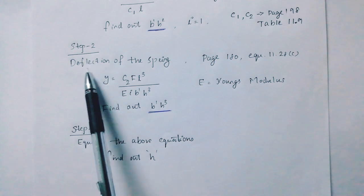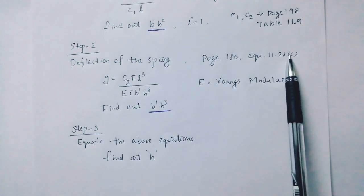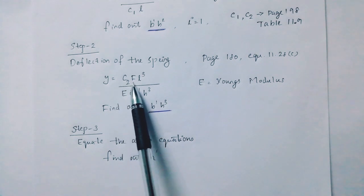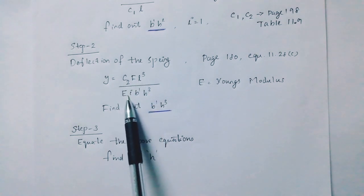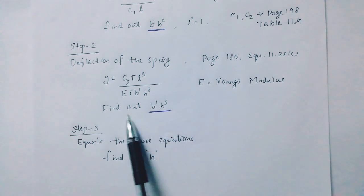Then let's take step 2, the deflection of the spring. The equation is page 180, 11.28c. Y equals c2 into f into l cubed divided by e into i into b dash h cubed. That's why we get b dash h cubed.